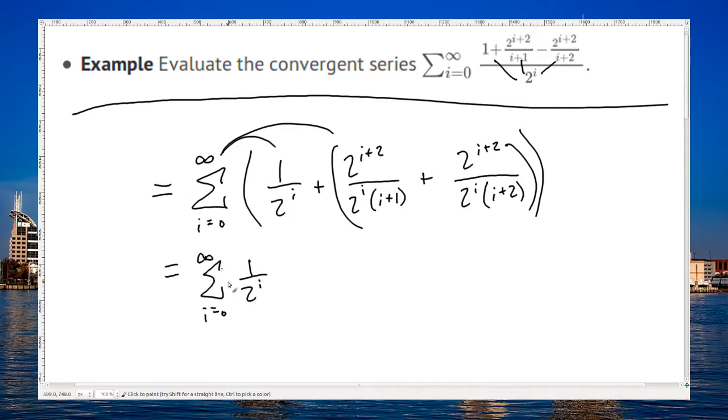So I get the series 1 over 2 to the i plus, alright, so why did I keep those together? I guess maybe I should have been nice and told you why. Well, we've got 2 to the i down here, you've got two more 2s on the top. So if I cancel all the 2s down here, I'm going to put the two extra 2s on top. And the same thing happens up here.